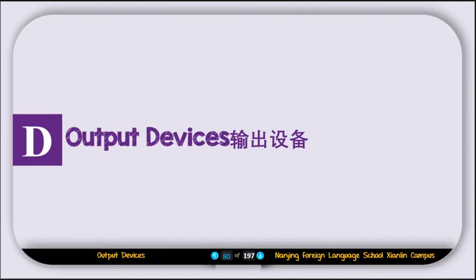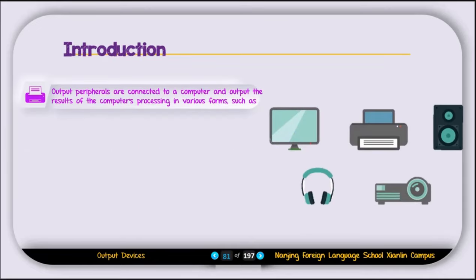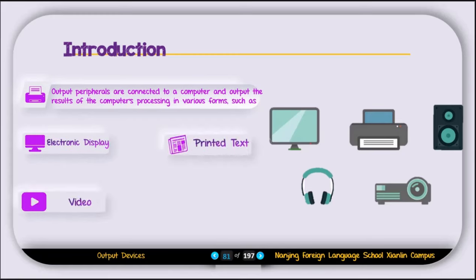Welcome back. In today's class we are going to discuss output devices and storage devices. Output peripherals are connected to a computer and output the result of computer processing in various forms such as electronic display, printed text like a printer, video using a monitor or projector, and audio using speakers or headphones.